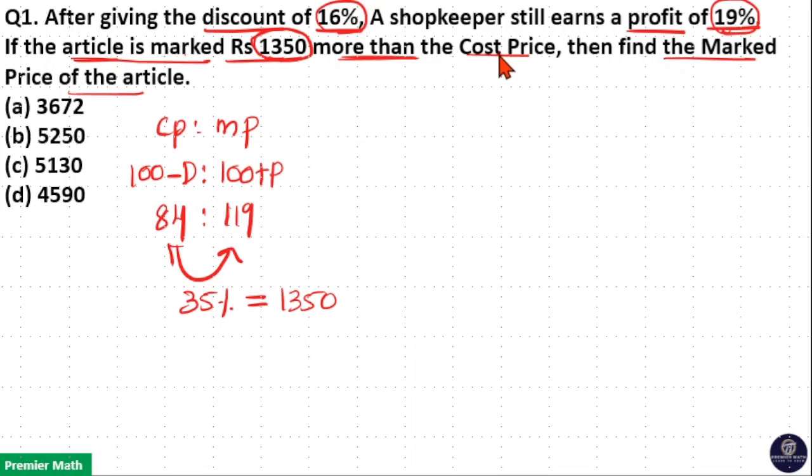That is difference between MP and CP is equal to 1350 which is 35%. Now we need to find out what 119% is.